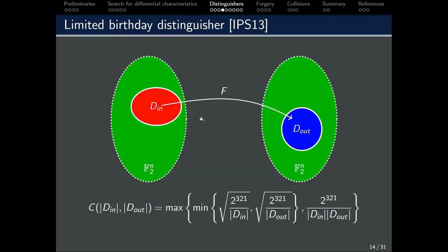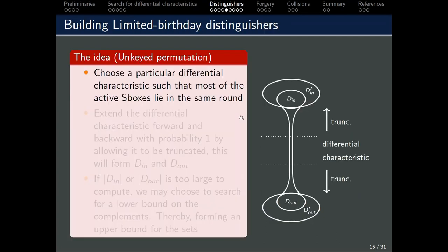Here is the background of the limited birthday problem. In the limited birthday problem, we ask the following question: What is the probability of a difference in D-in that can be mapped to a difference in D-out? In this case, D-in and D-out are both subsets in the possible input and output difference space. For an ideal permutation, the cost is given here. To find a distinguisher, we will have to achieve a cost that is lower than this.